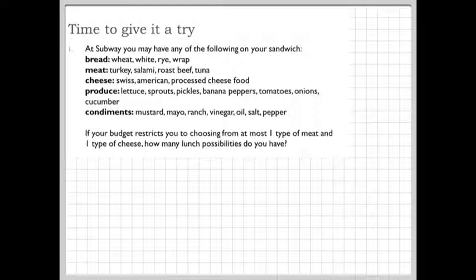You're at Subway getting yourself a sandwich for lunch, and you are trying to figure out how many lunch possibilities you have. There are a few restrictions. We are assuming, for your budget, you can have only one type of meat and only one type of cheese. But other than that, we're also making the assumption that you must have some kind of bread, otherwise it wouldn't really be a sandwich. But you can have an unlimited number of the produce and the condiments.